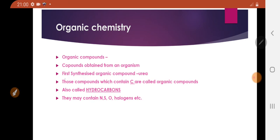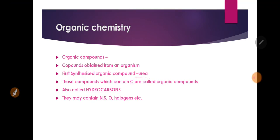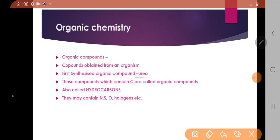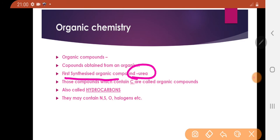But urea is the first synthesized organic compound. In the laboratory, German scientist Wöhler was the first to synthesize an organic compound. The formula of urea is NH2CONH2.